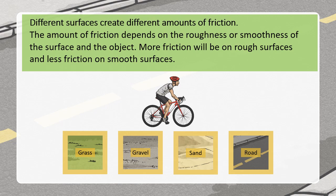Different surfaces have different friction. When your surface is smooth, like a road or gravel, it will have less friction. When it is rough, like grass and sand, it will have more friction. Depending upon the smoothness and roughness of the surface, friction also changes.